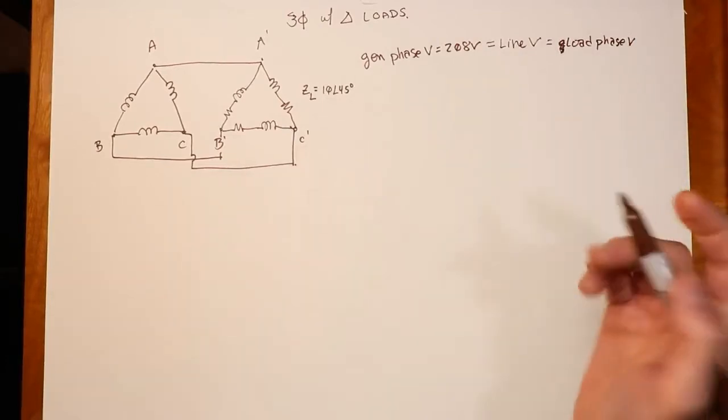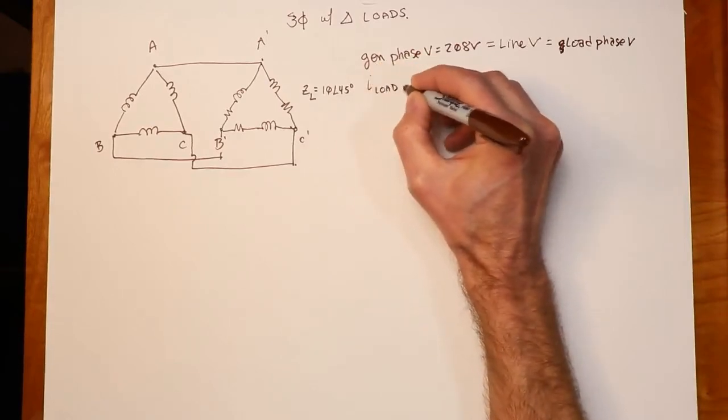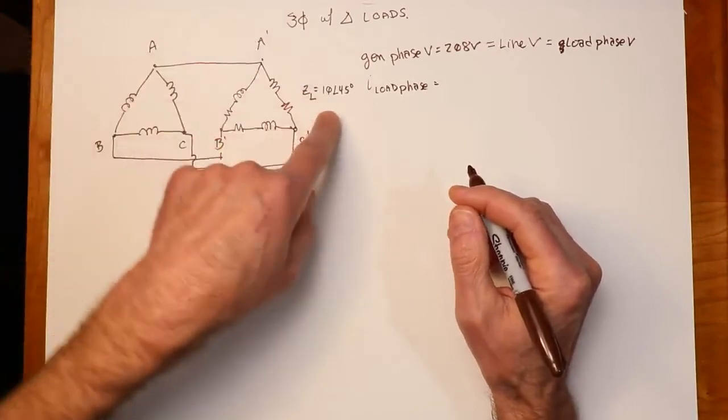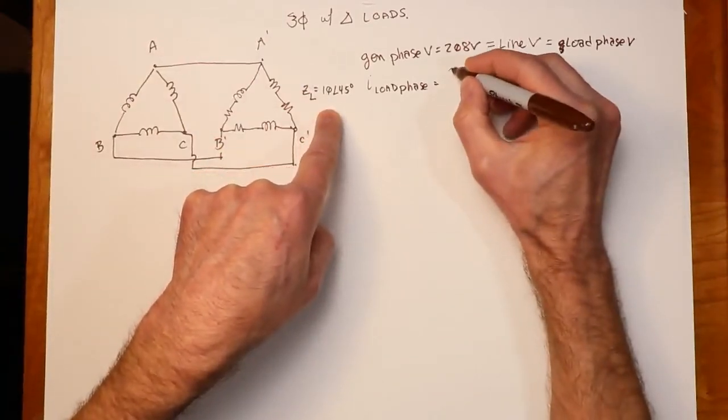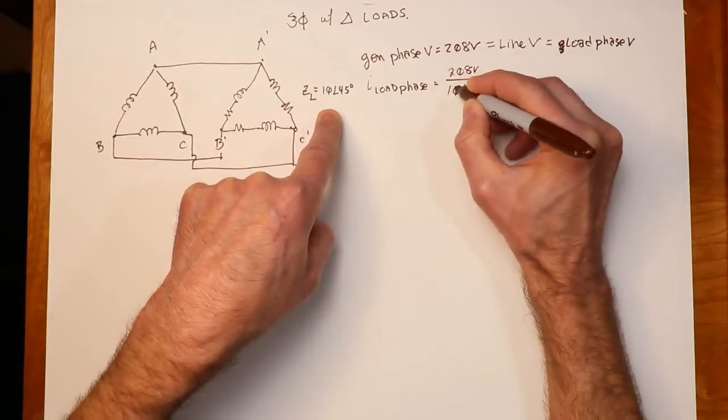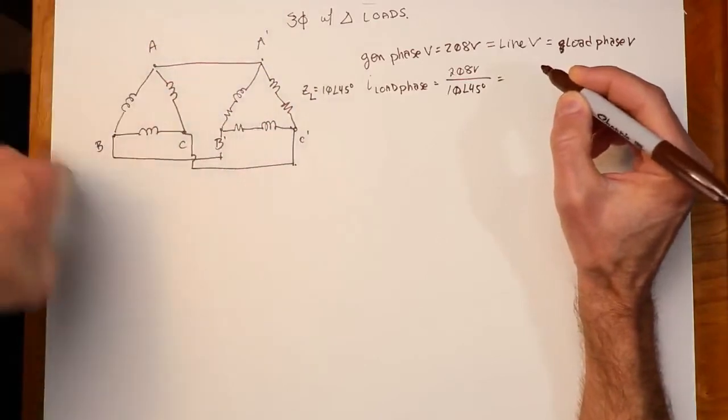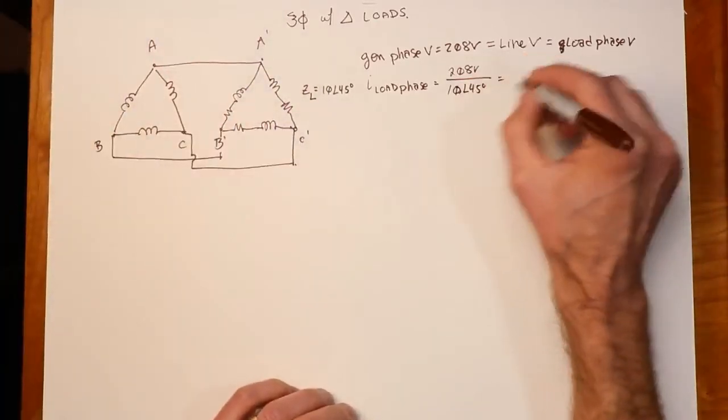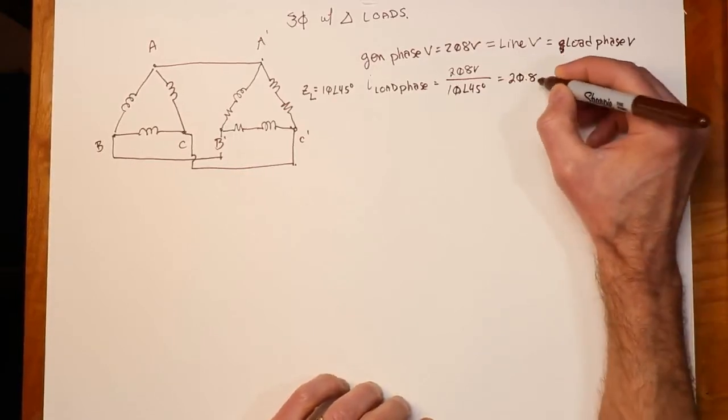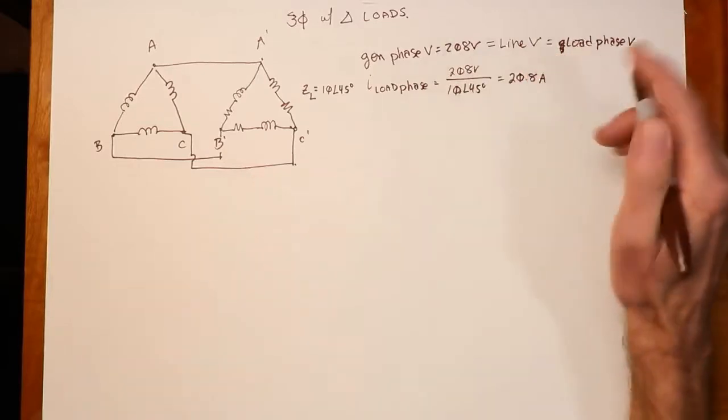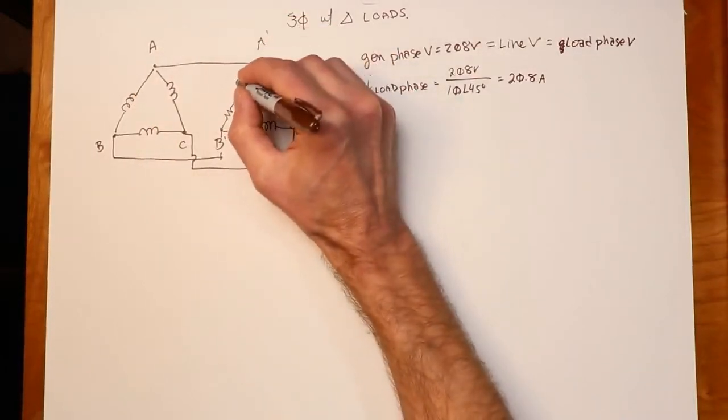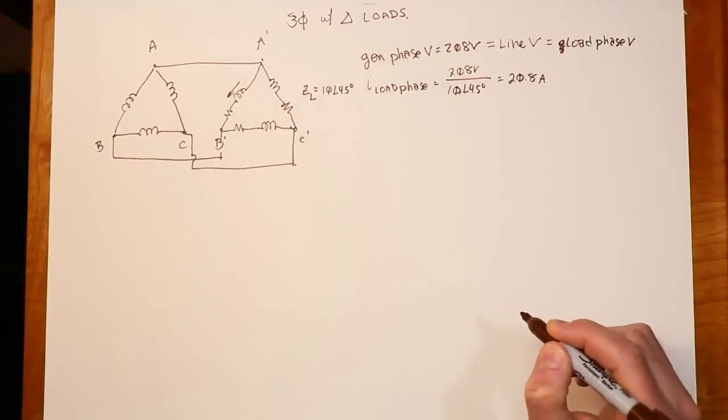Now, what about the currents? What do we see, for example, for the load phase current? Well, you're generating 208, you're applying 208, and that 208 is sitting across the load, which is 10 at 45. So we just take the 208, divide by your 10 at 45, and again, I'm not going to be too persnickety about the angles here, recognizing that there's three going out at 120 and 240 from the base. But anyway, when we divide that out, we're going to wind up with 20.8 amps, negative 45 degrees for that particular one. But that's what we see for the current sitting in the load. So you could imagine, I'll just arbitrarily draw a direction and say, here's my load phase current. That's 20.8 amps.